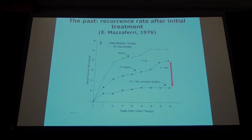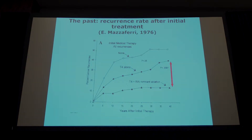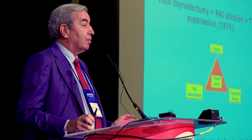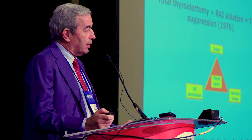This is the start of the story of adjuvant treatment. Ernest Mazzaferri, 30 years ago, claimed that T4 treatment decreased the risk of recurrence compared to no T4 treatment, and that radioiodine ablation would further decrease the risk of recurrence. This led to the old dogma that total thyroidectomy followed by radioactive iodine ablation followed by TSH suppression should be performed. But at the time most patients had extended disease, and this strategy was applied to all patients with differentiated carcinoma, resulting in probably overtreating most of them.